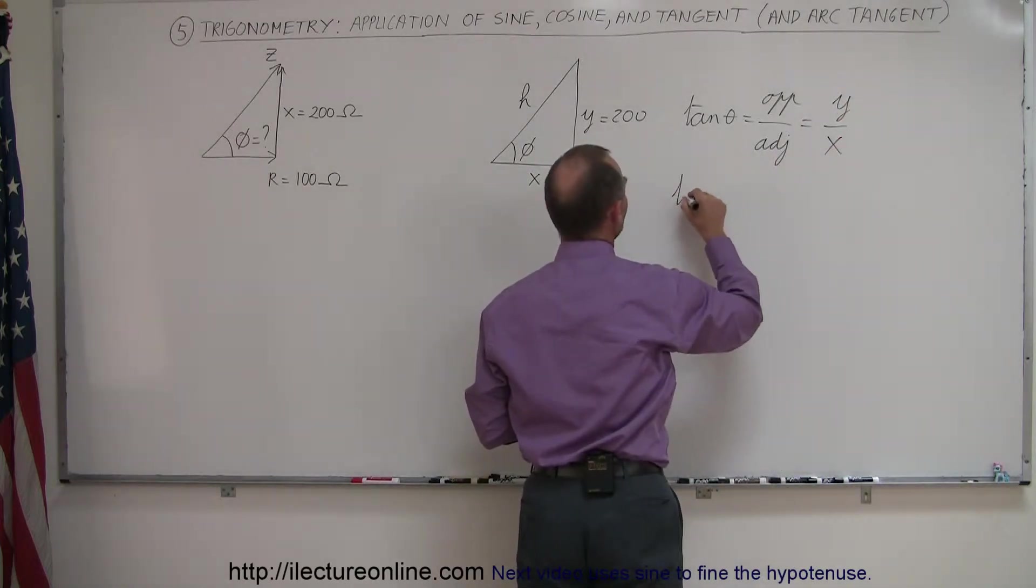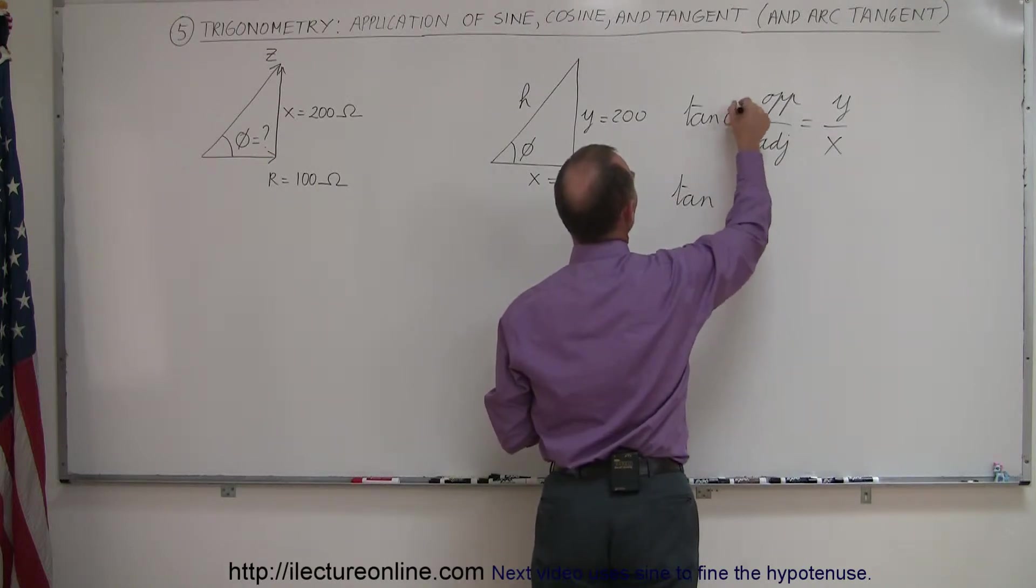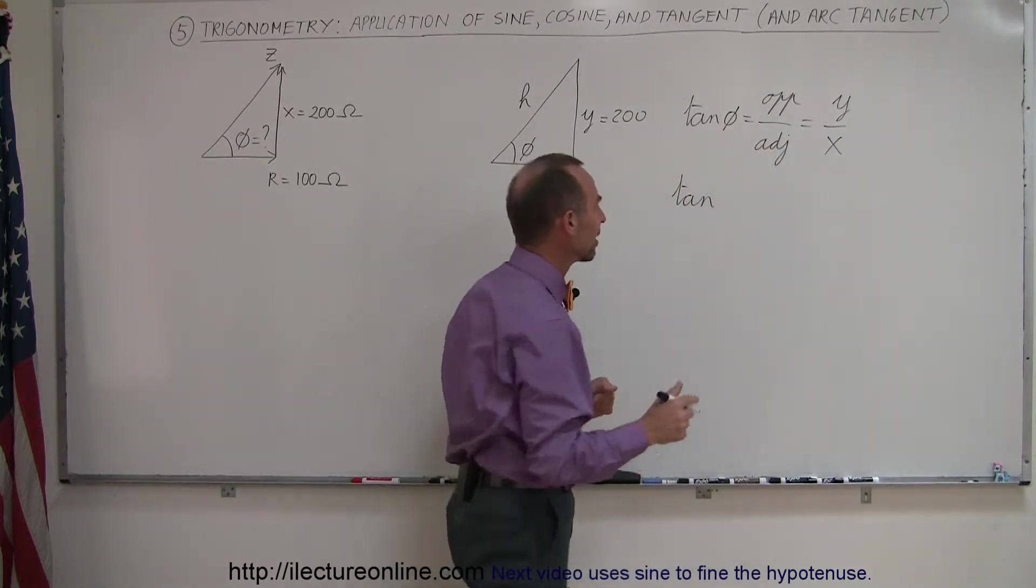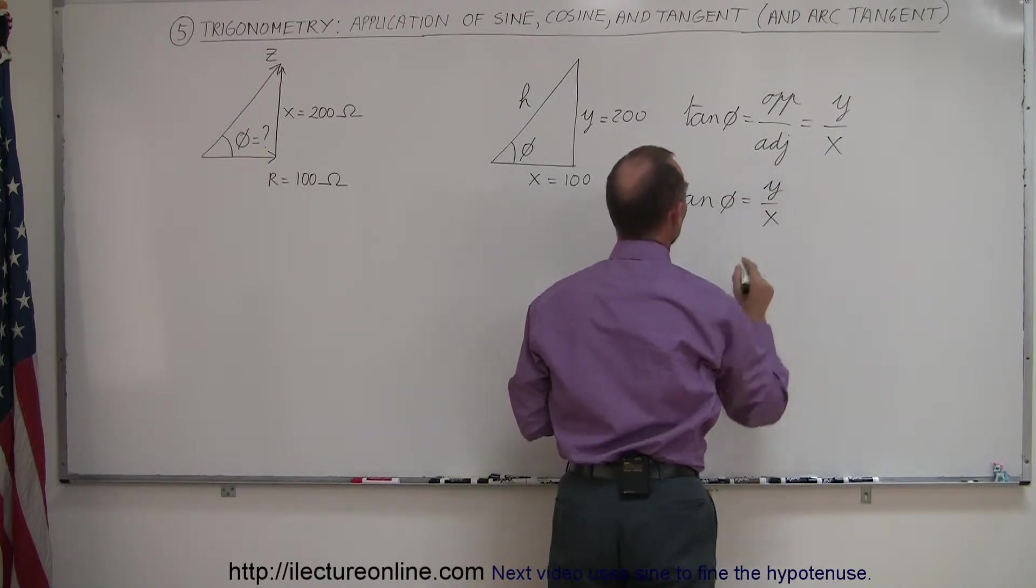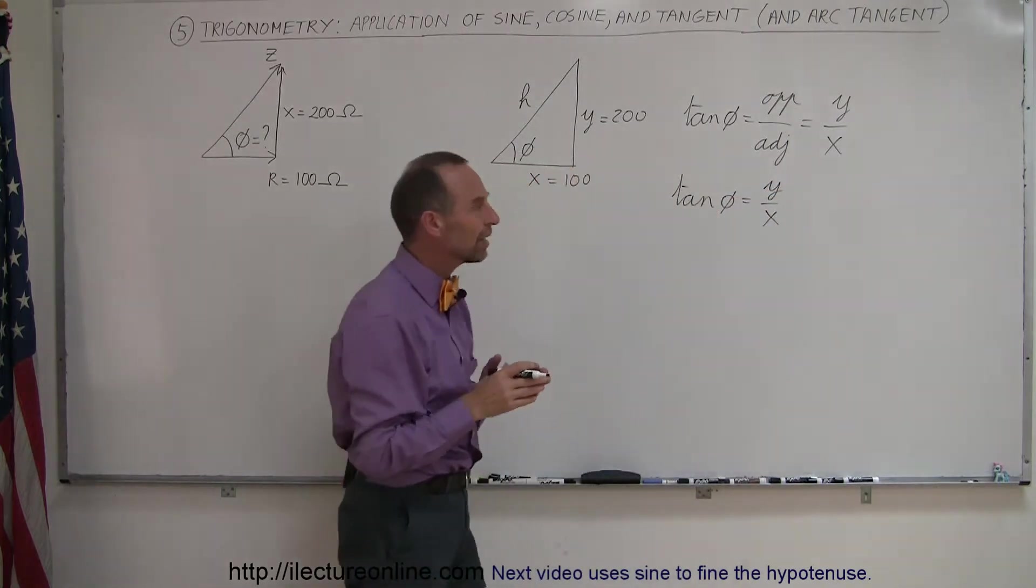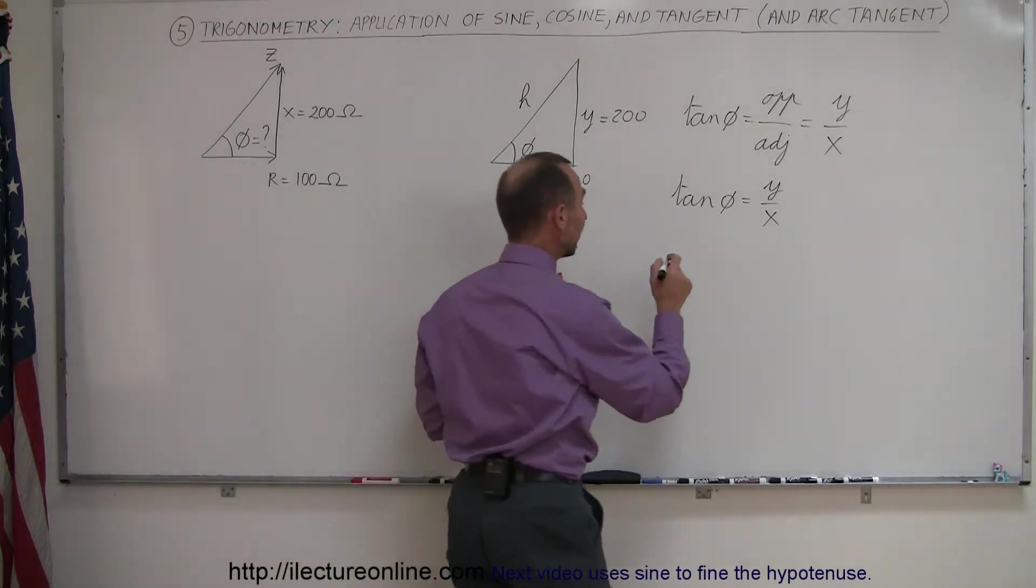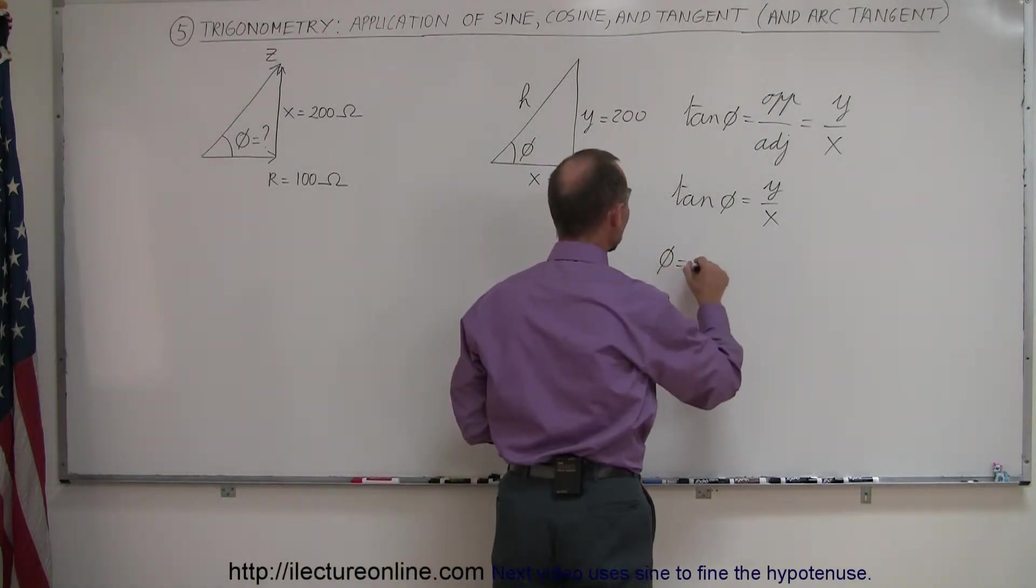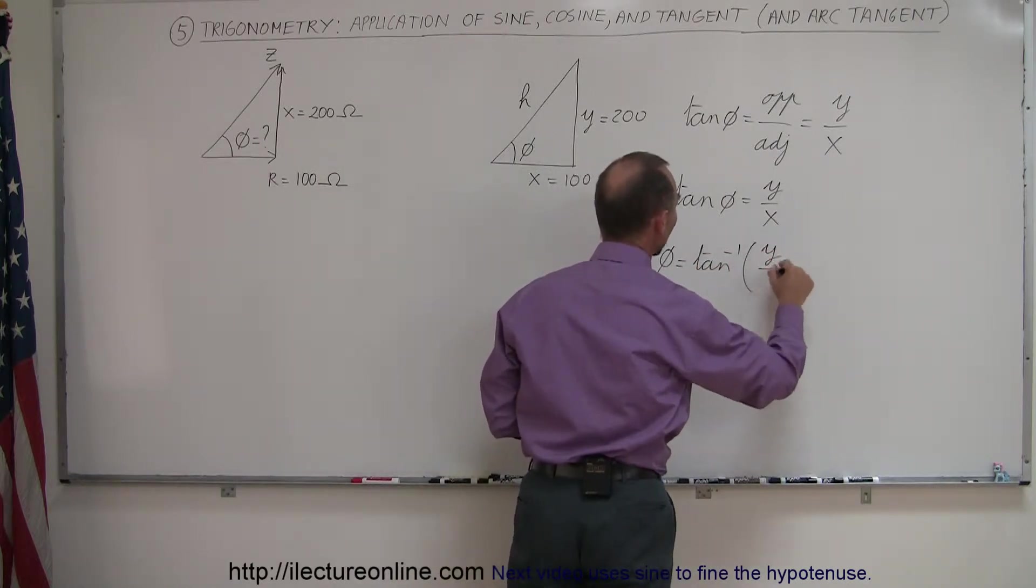So what we have here is that the tangent, and I call the theta. I actually use a different angle. I'll call it phi. So the tangent of phi here is equal to y over x. But we're not looking for the tangent of phi. We're looking for phi. So it turns out that you can then say that phi is equal to the arctangent, or inverse tangent, of y over x.